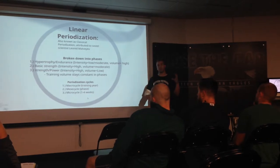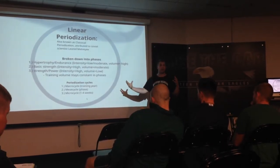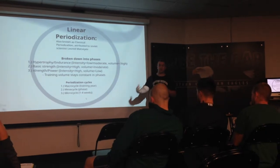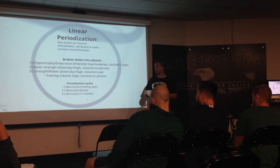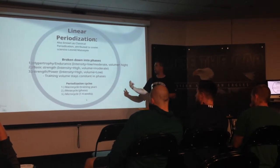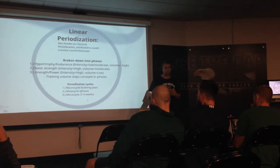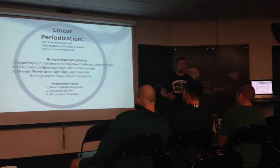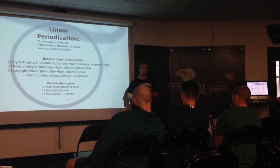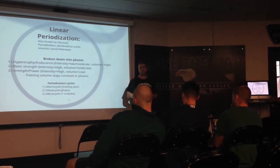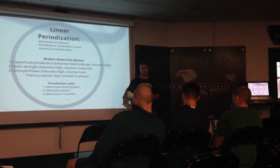The mesocycle is normally the phases broken down: hypertrophy, basic strength, and strength and power. The microcycle is week to week, or every one to two weeks depending on how you want to run it. There's long linear periodization, and also what Paul calls block periodization, which is a version of short linear periodization.